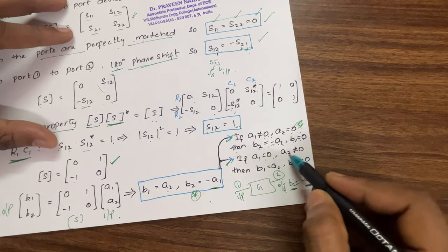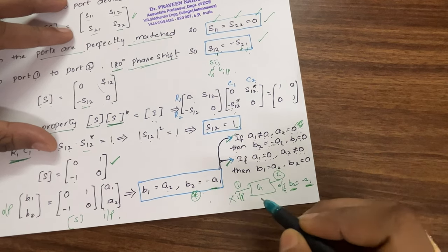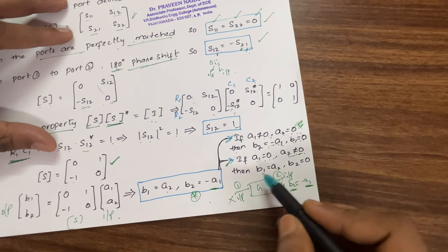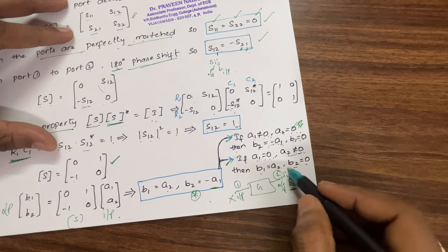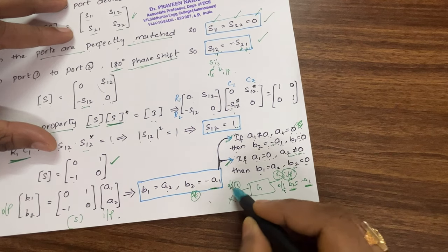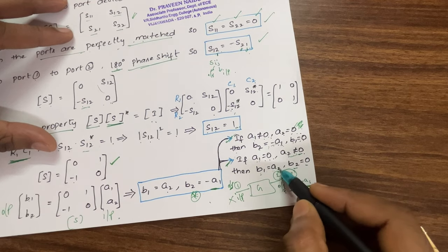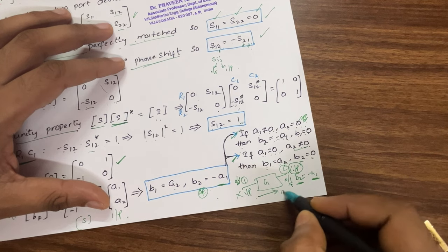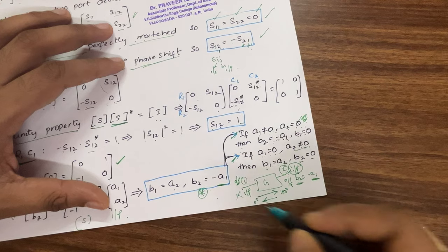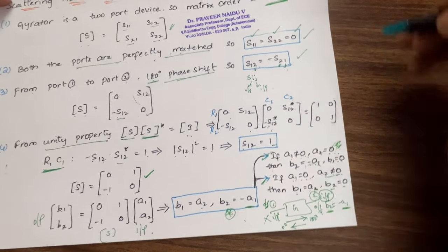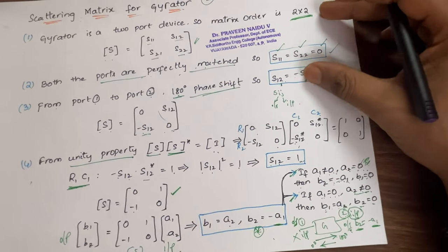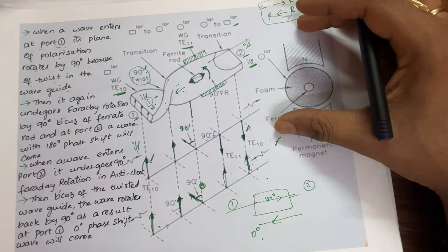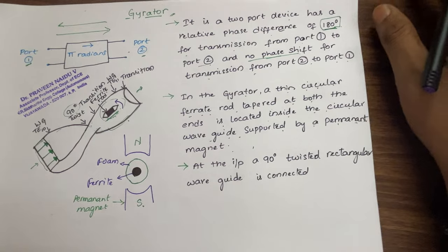For case two: if a1 = 0 and a2 ≠ 0 — meaning input is applied at port two only — we get b1 = a2 and b2 = 0. Output at port one has zero degrees phase shift relative to the input at port two. This confirms: moving from port one to port two gives 180 degrees phase shift, and moving from port two to port one gives zero degrees phase shift. This concludes the discussion on the two-port gyrator, its S-matrix derivation, the comparison between ferrite and twisted waveguide, and its working principle.